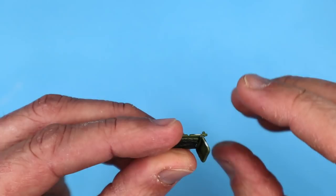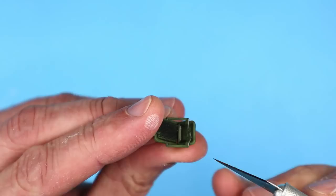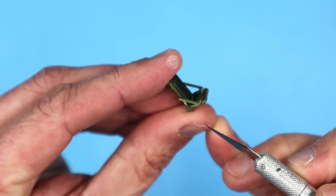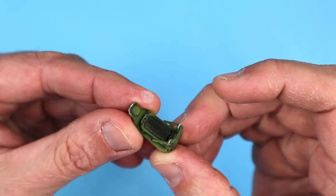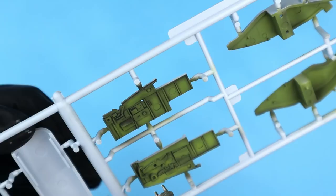I glued the seat pan to the seat back. The kit has a pretty neat feature in that the lap belts are molded with the seat pan support bars and it helps to create more raised definition for those belts. The seat was glued to the rear cockpit bulkhead before I continued on with the next steps in the cockpit painting process.